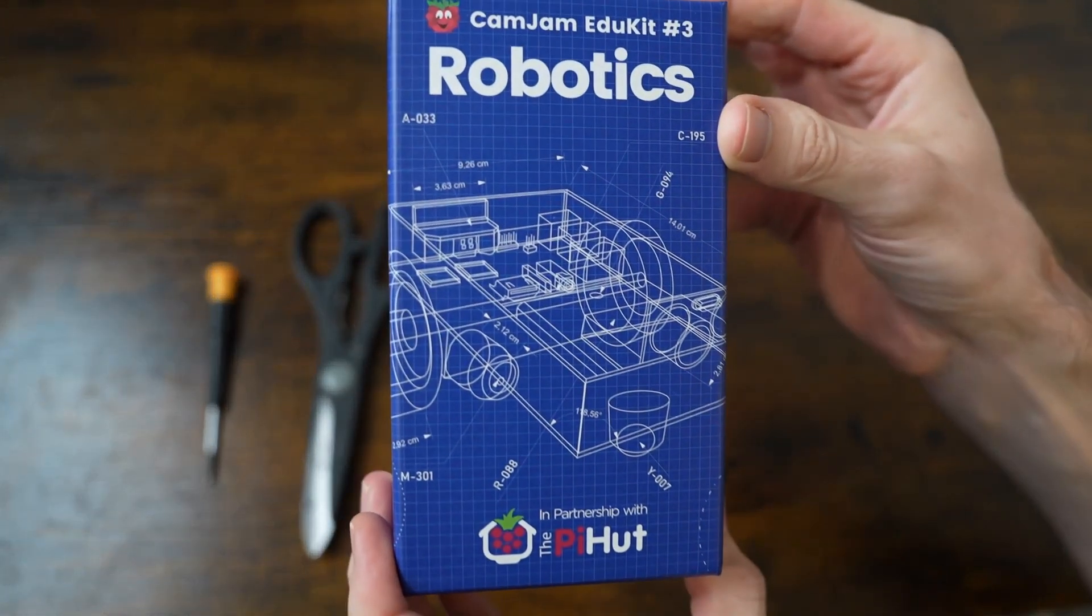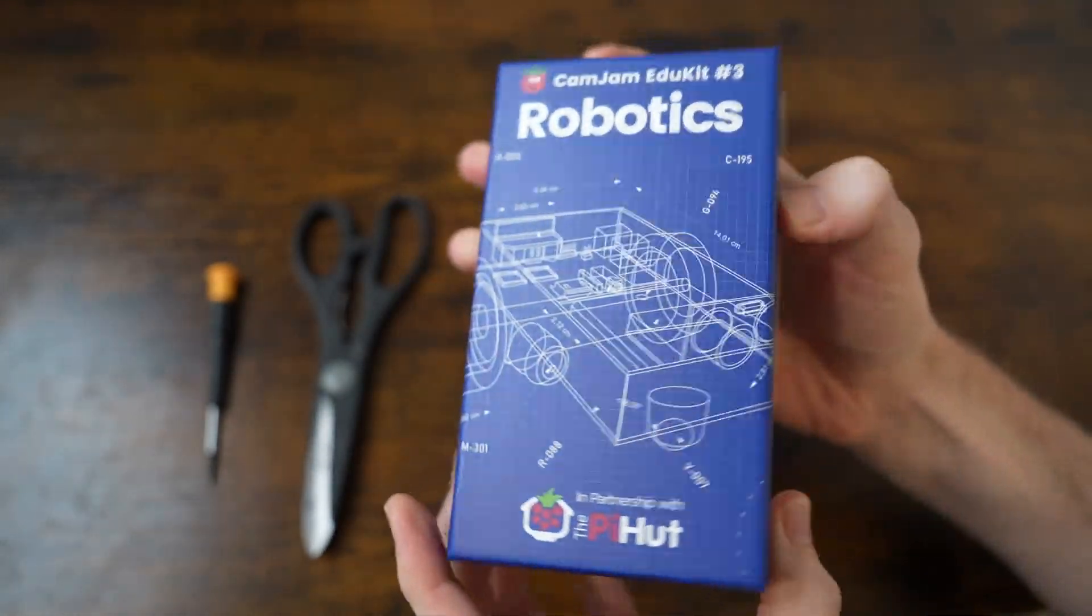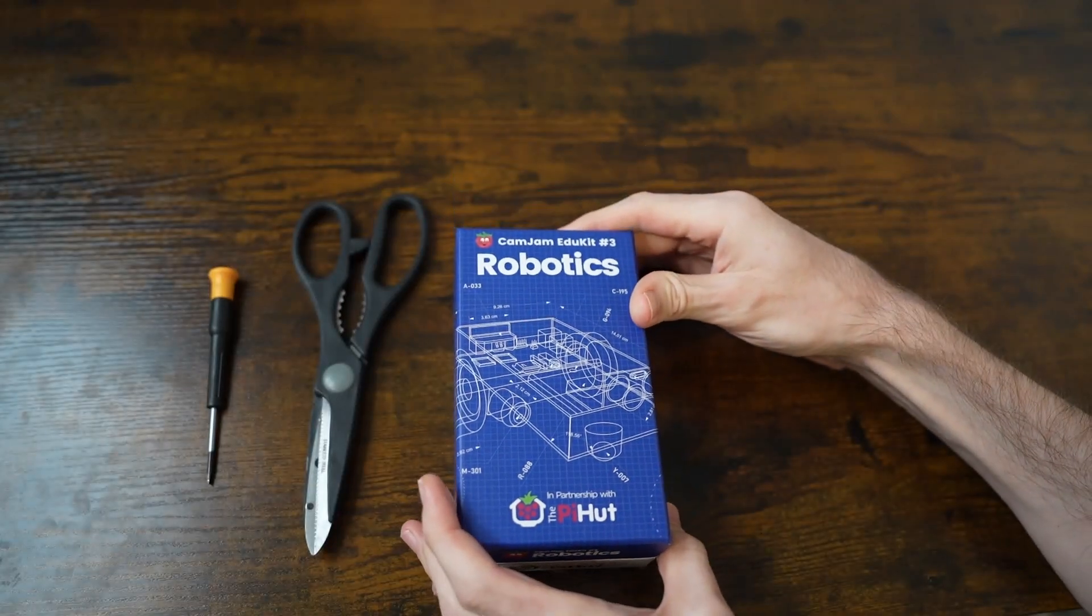In addition to the kit, I have a Raspberry Pi Zero, a microSD card, an external battery, and four AA batteries. These are all linked in the description.